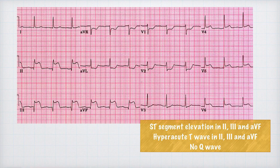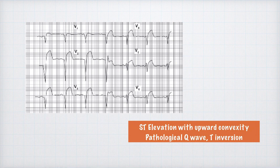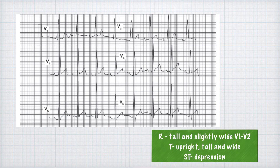Example ECG 3: ST elevation in leads II, III, and aVF with hyperacute T waves in the same leads and absent Q waves — this represents acute inferior MI. Example ECG 4: ST elevation with upward convexity in leads V1 to V6, pathological Q waves, and T wave inversion — this is acute extensive anterior MI. Example ECG 5: tall and slightly wide R waves in V1 to V2, upright tall and wide T waves in V1 to V2, and ST depression — this is true posterior MI.